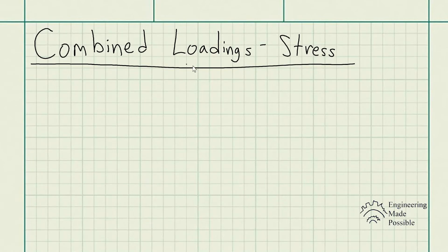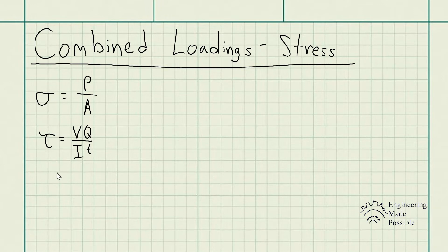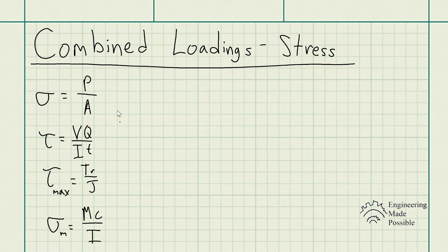Today we're going over combined loadings to calculate stress when dealing with more than one particular loading. Previously we've covered multiple loading scenarios: axial stress due to a tensile or compressive load, shear stress due to a shear load, shear stress due to a torsional load, and bending stress due to a moment. The question is, which of these stresses do you use when an object experiences multiple types of loading simultaneously?